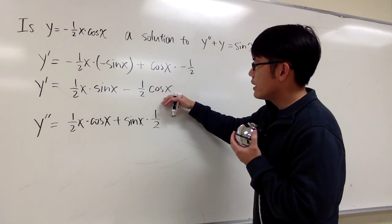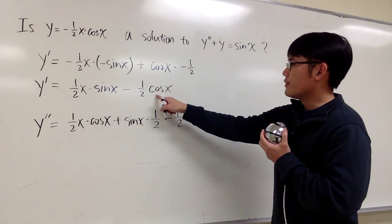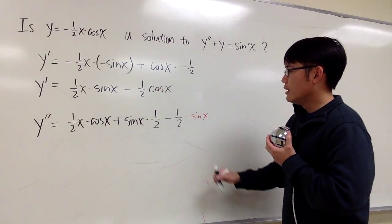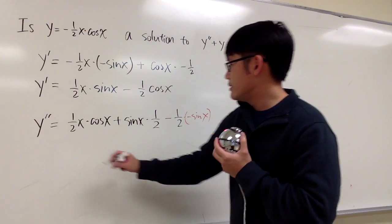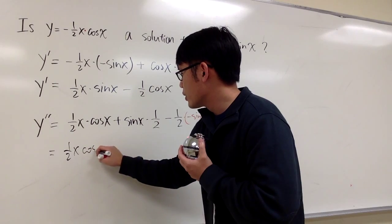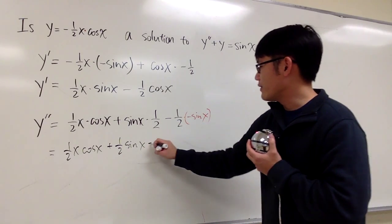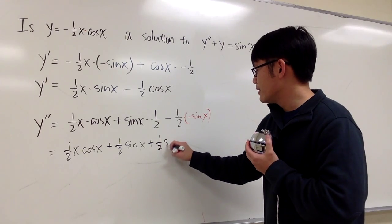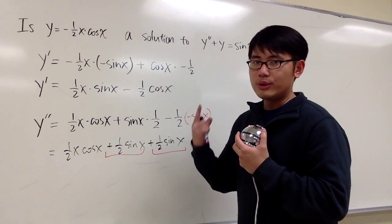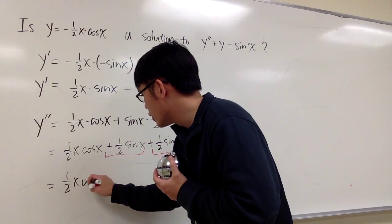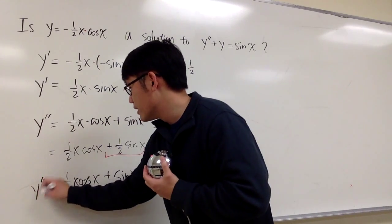Now we differentiate the remaining term: subtract and put on the minus one-half, and then the derivative of cosine x is negative sine x. So be careful — this is going to be minus negative sine x, so all in all it's a plus. This gives us one-half x cosine x, then one-half sine x, and then minus times minus we add another one-half sine x. One-half plus one-half is one, so this is one-half x cosine x plus sine x. This is the second derivative.